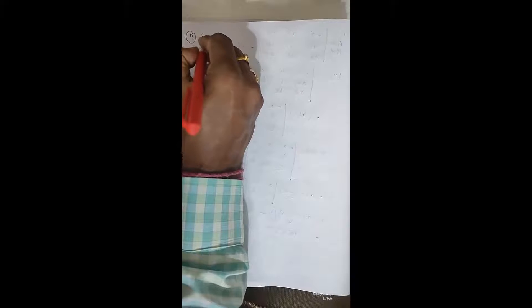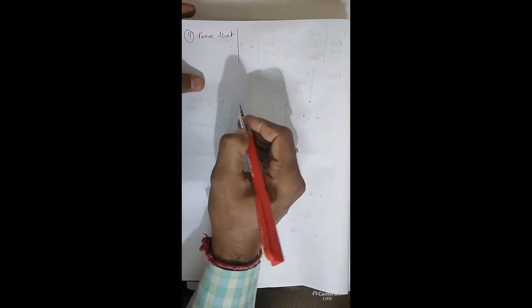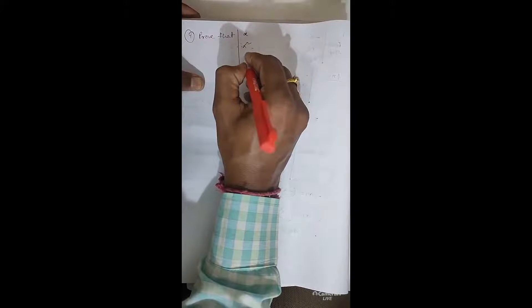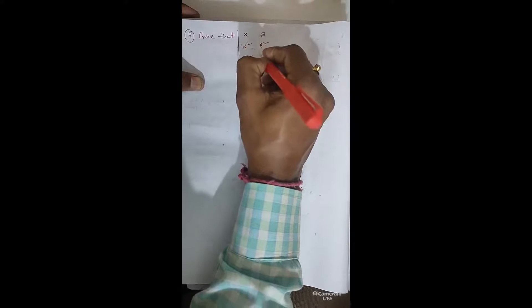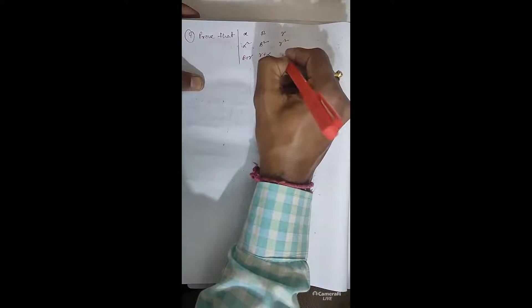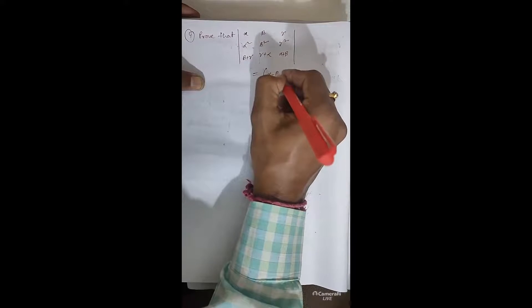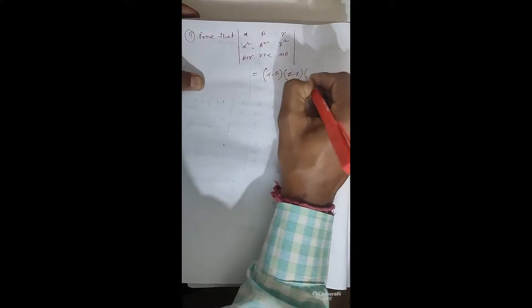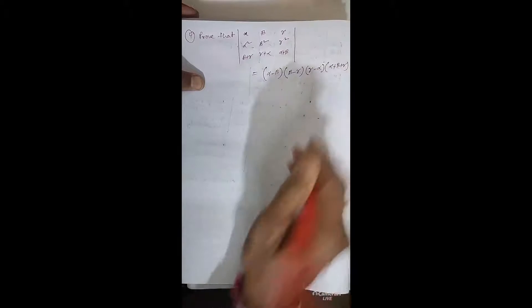Prove that the determinant with rows (α, α², β+γ), (β, β², γ+α), (γ, γ², α+β) equals (α−β)(β−γ)(γ−α)(α+β+γ).